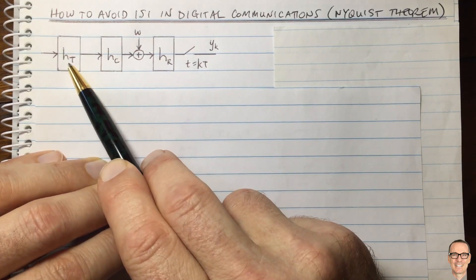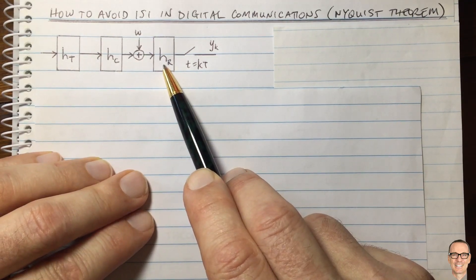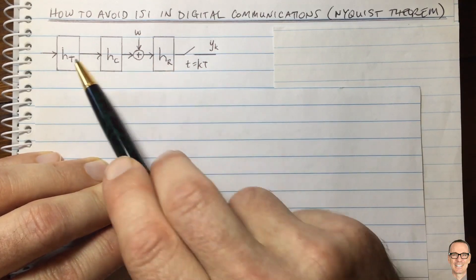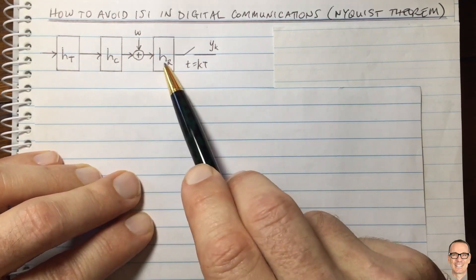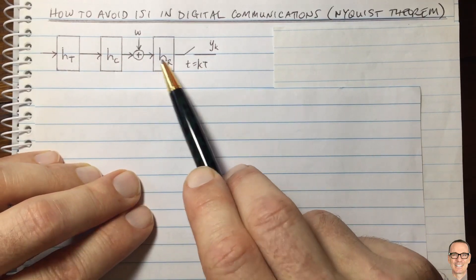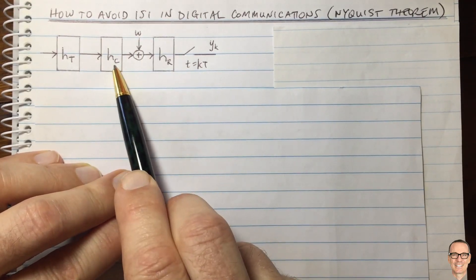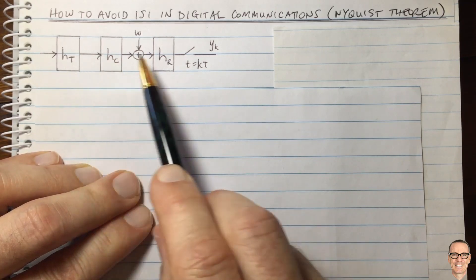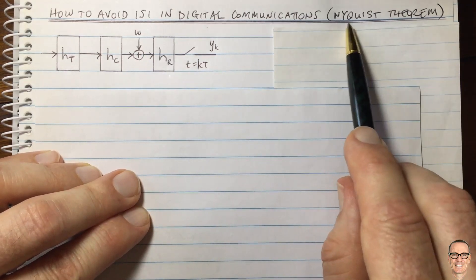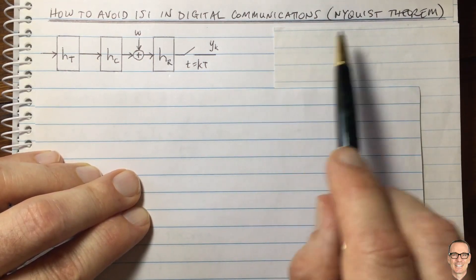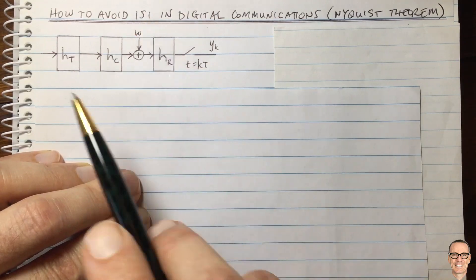You also have the ability to put a filter in your transmitter and a filter in your receiver. The design task is to design these two filters. You don't get a choice on the channel — the channel comes from nature and physics — but you have a choice of the transmit filter and the receive filter, and we'd like to design those in order to avoid the inter-symbol interference.